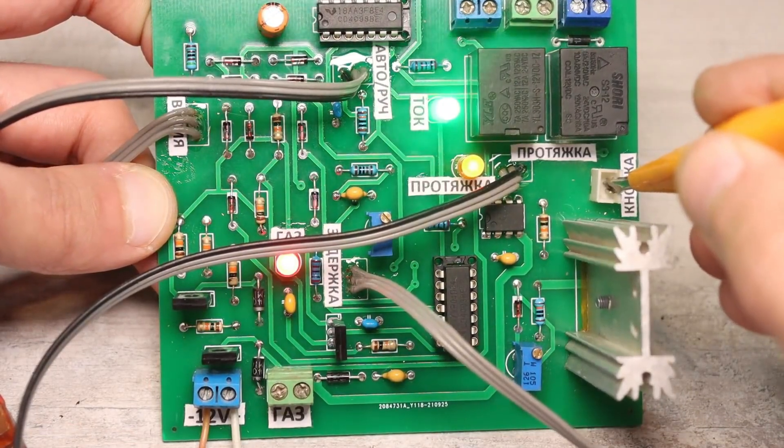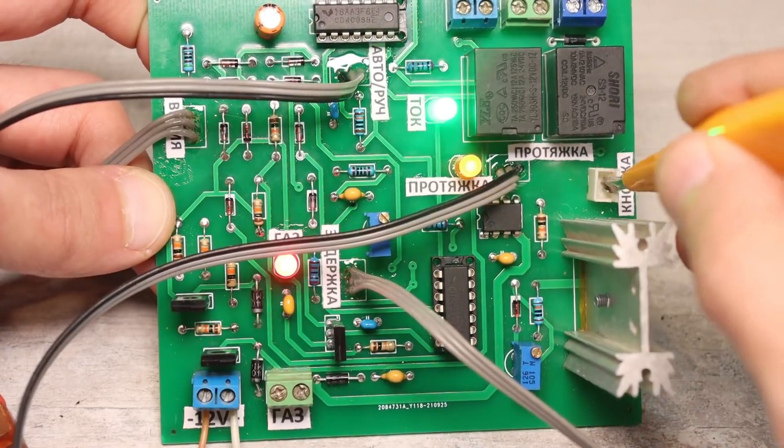This is convenient if you need to make neat drops or seams of the same length. Moreover, in this mode, if you release the button, maybe you changed your mind, the welding will stop.